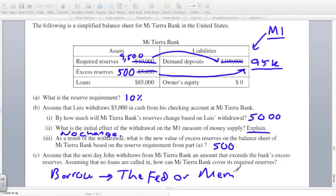So if they borrow from the Fed, what rate would they pay? They would pay the discount rate. If they borrow from a member bank, what rate would they pay? They'd pay the federal funds rate.